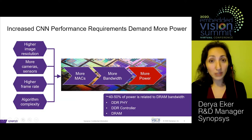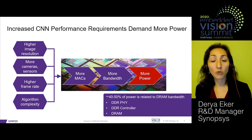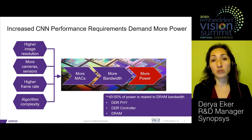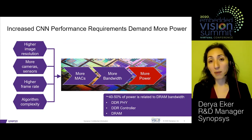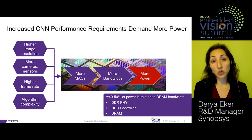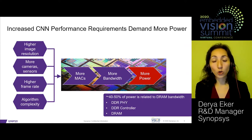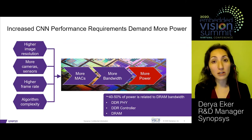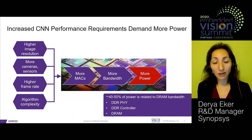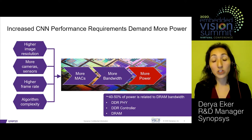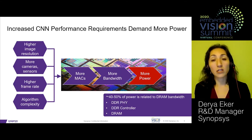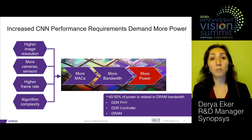Beyond algorithm complexity, other factors drive performance: higher image resolution such as full HD, more cameras and sensors, and higher frame rates. All this data and compute requires more performance, which may mean adding more MACs and increasing bandwidth. Increasing bandwidth may imply accessing external memory, which increases power consumption. At the system level, DRAM accesses can contribute almost 50% of overall power consumption, so the drive for higher performance must be balanced with power implications.